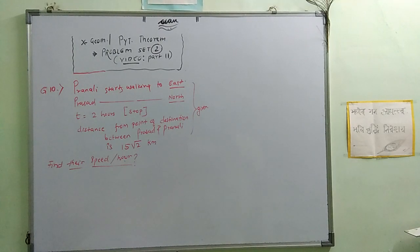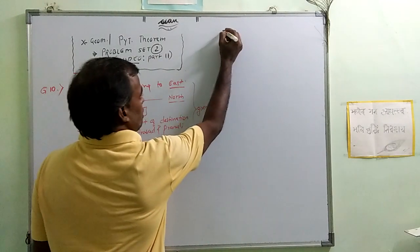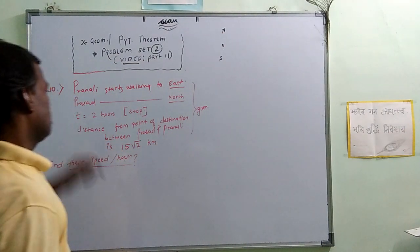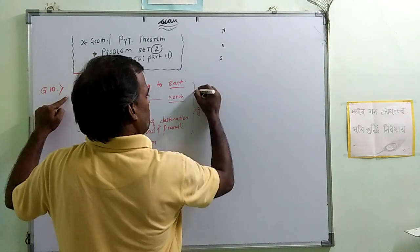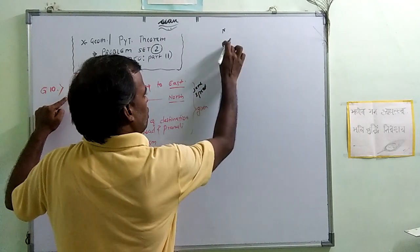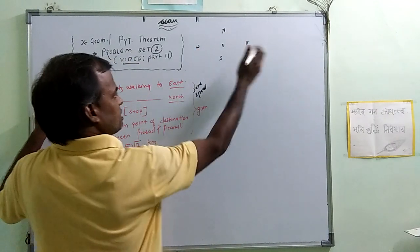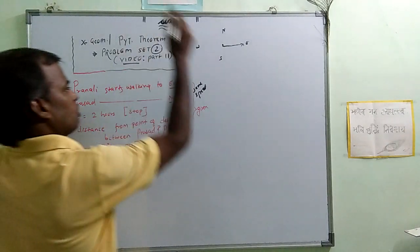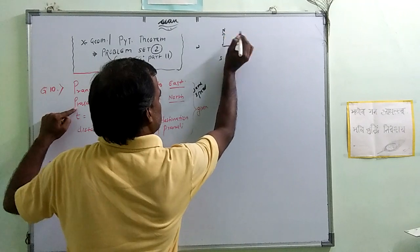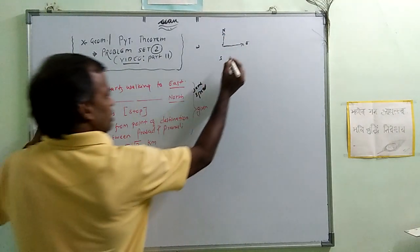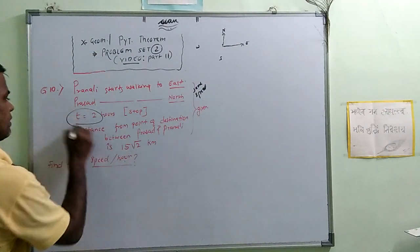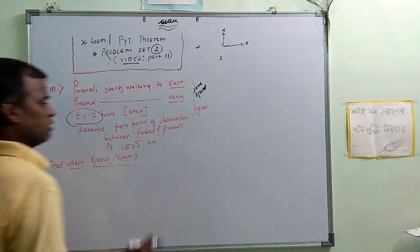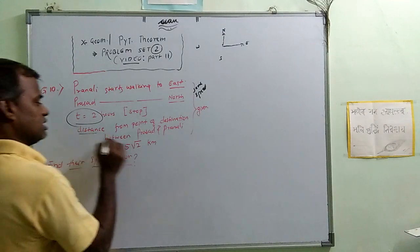This is north, this is south. Pranali starts walking to the east — this is east, this is west — so Pranali goes this side and reaches a point. At the same time, Prasad goes to the north and reaches another point. They have taken 2 hours to reach their respective points. The question asks for the distance between Prasad and Pranali.